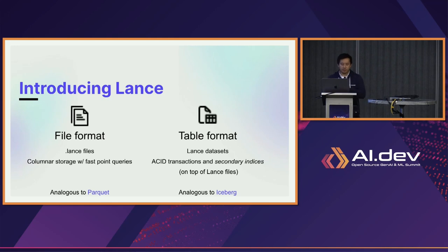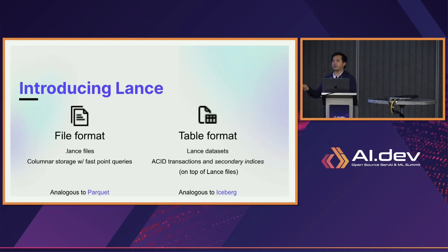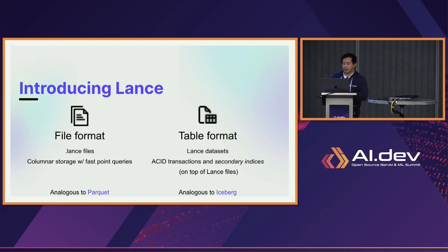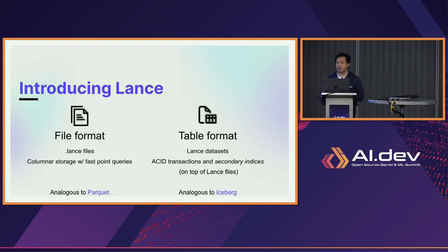We know that Parquet and ORC are not very good at these new workloads, and it would not be conducive to try to modify their existing implementations. That's why we built Lance. Lance is essentially two things: first, it's a new columnar file format with columnar storage and fast point queries, analogous to Parquet. Second, it's a table format — kind of like a lightweight version of Iceberg, Hudi, or Delta — that gives you lightweight transactions, allows you to integrate secondary indices, and manages versioning and time travel on top of Lance files.